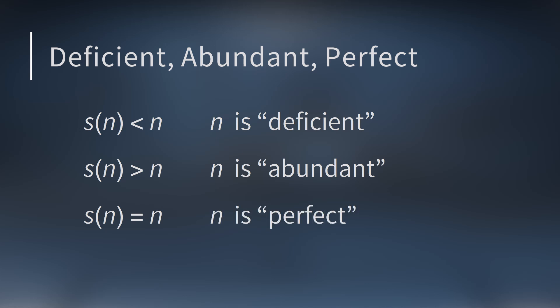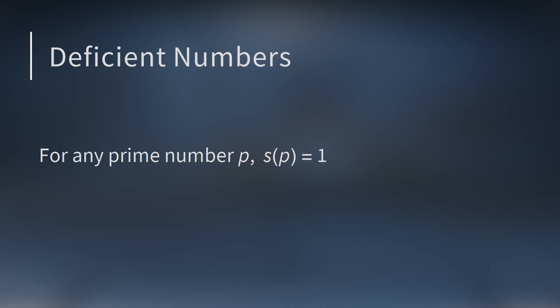This raises a few interesting questions. How many integers are there in each of these three categories? Is there an infinite number? We can actually answer some of these really quickly. Deficient numbers are straightforward, because for any prime number P, S of P equals 1. So prime numbers are all deficient. Since there's an infinite number of primes, we know there's an infinite number of deficient numbers.